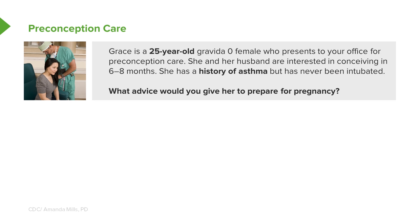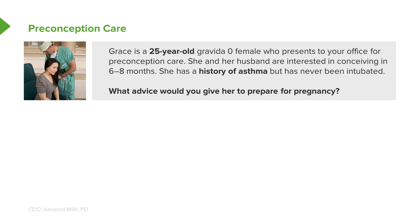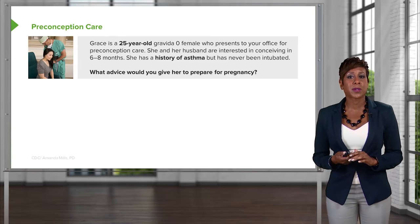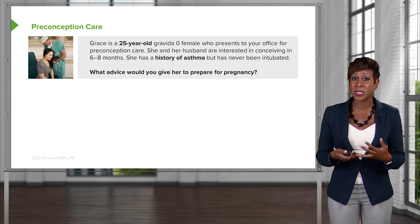Going back to our patient Grace — a 25-year-old presenting for preconception care — we need to make sure she is taking folic acid as she's looking to conceive in six to eight months. We also need to address her history of asthma, making sure she's aware that her asthma may get worse in pregnancy, it may stay the same, or it may get better.